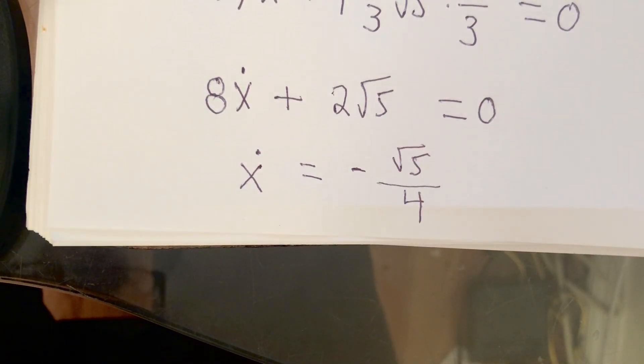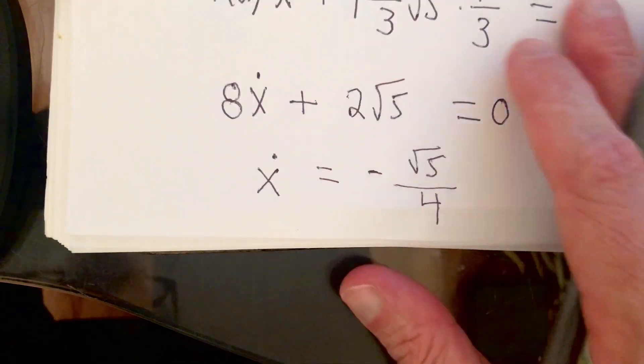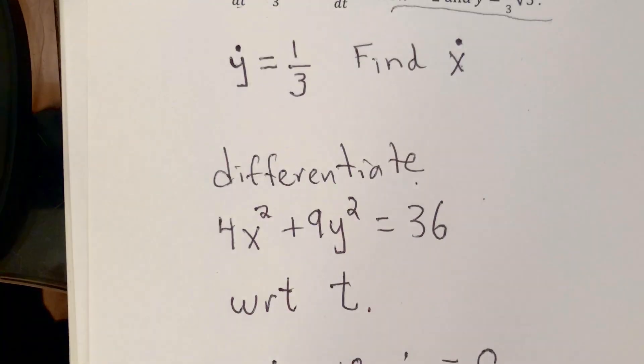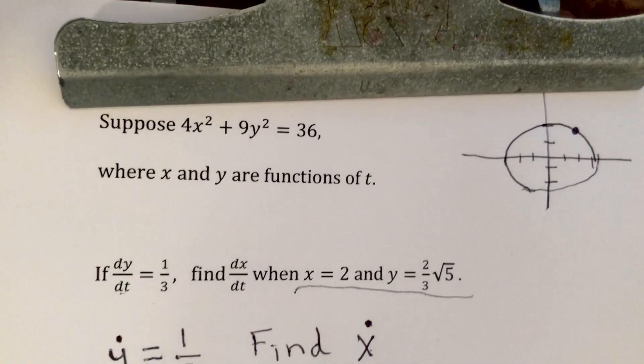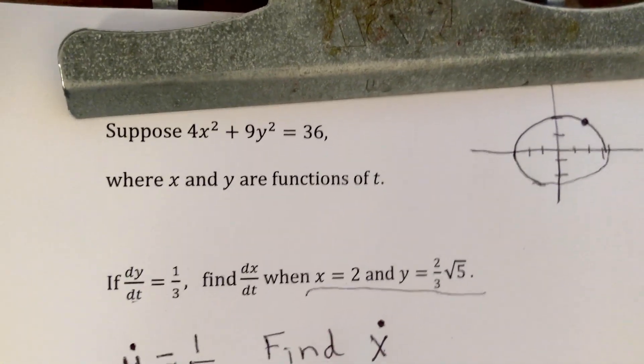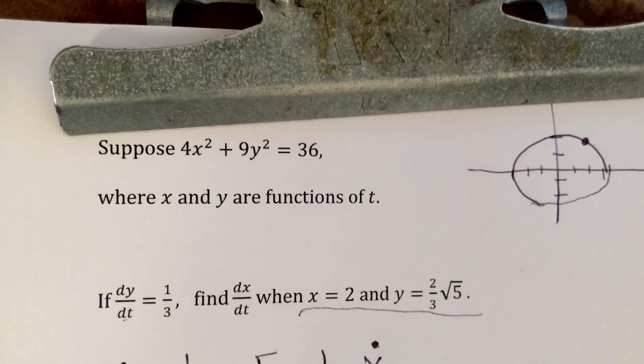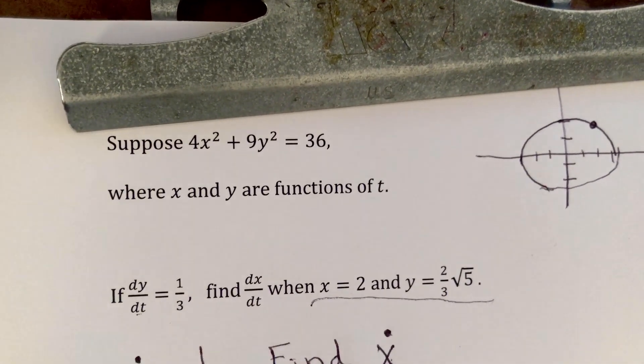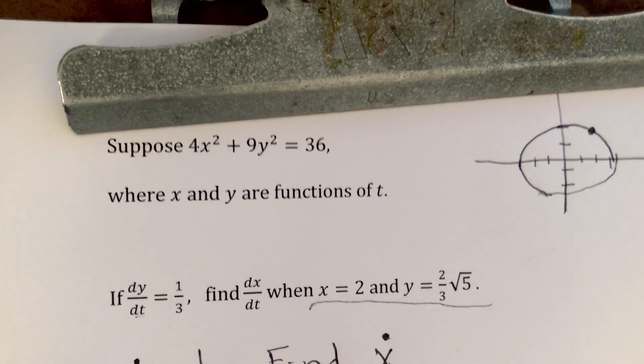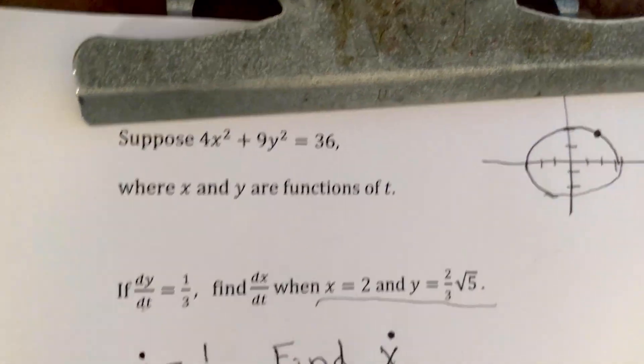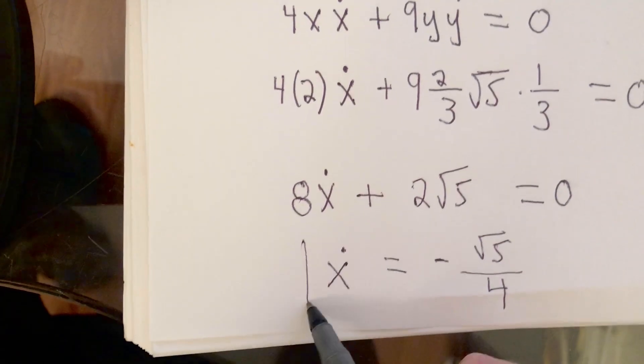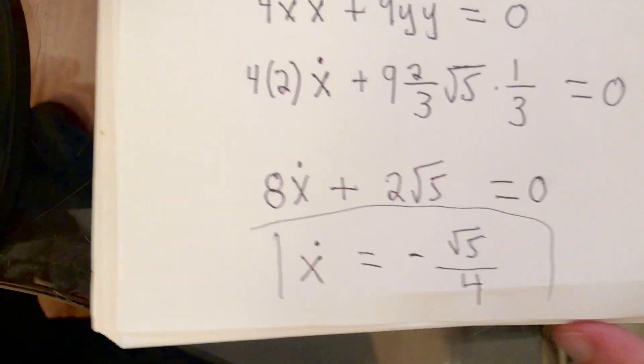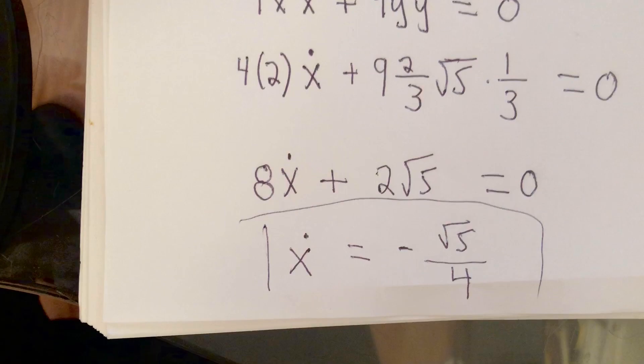Now, why did we get a negative value? Let's go back to our picture. Remember our point in the first quadrant. So from that point, if we move in the direction where y is increasing, x must be decreasing. Do you agree? So what we get is x dot equals negative square root of 5 over 4.